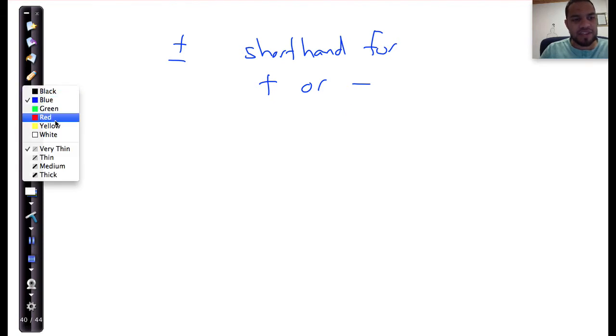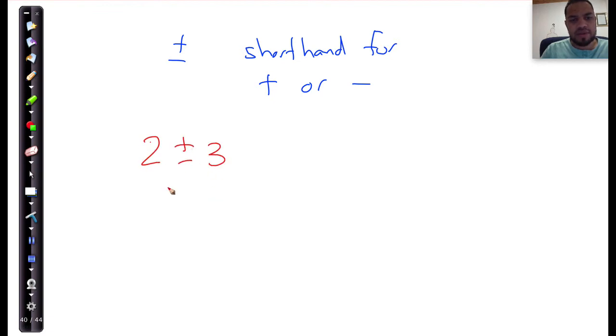The plus minus sign, it is a shorthand. I consider it a shorthand for plus or minus. So this means if I had to give you something along the lines of 2 plus or minus 3, you're going to tell me this really represents 2 plus 3, which is equal to 5, and it represents 2 minus 3, which is equal to negative 1.